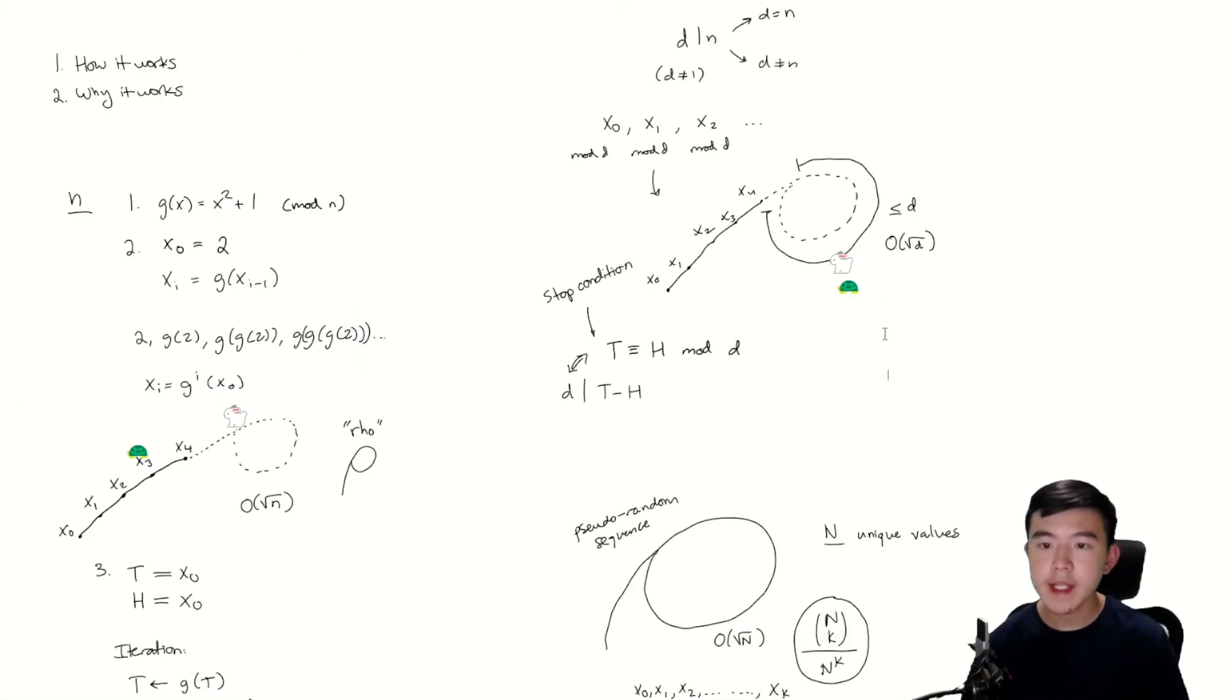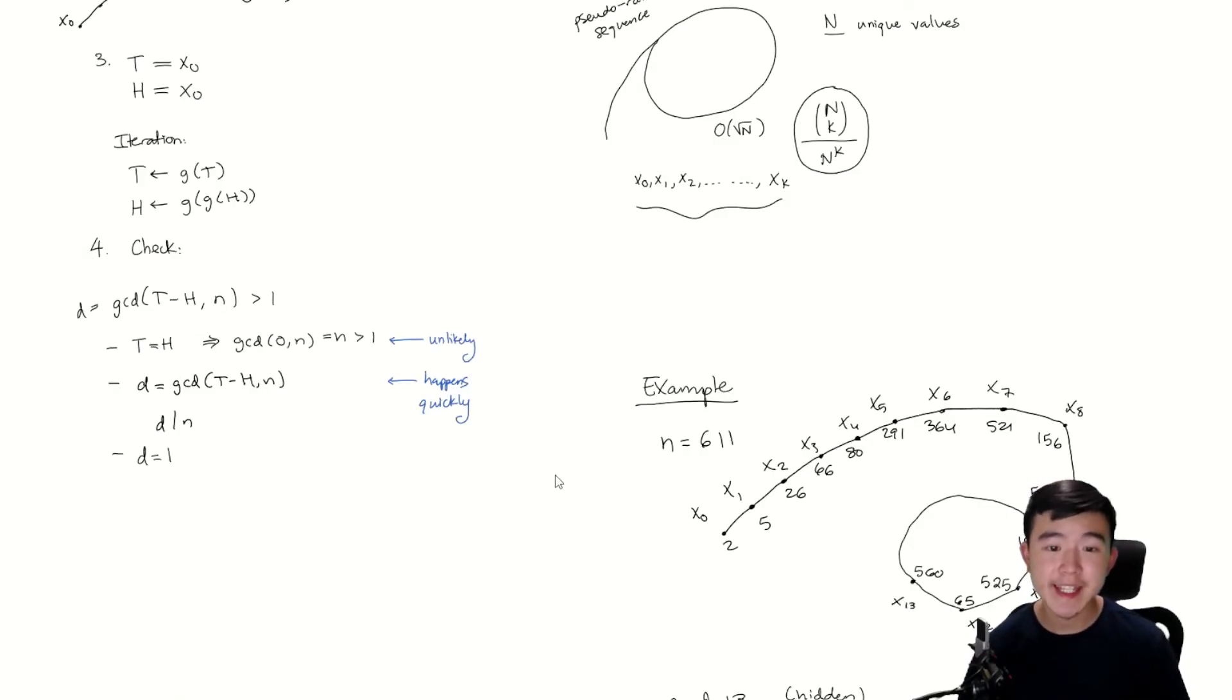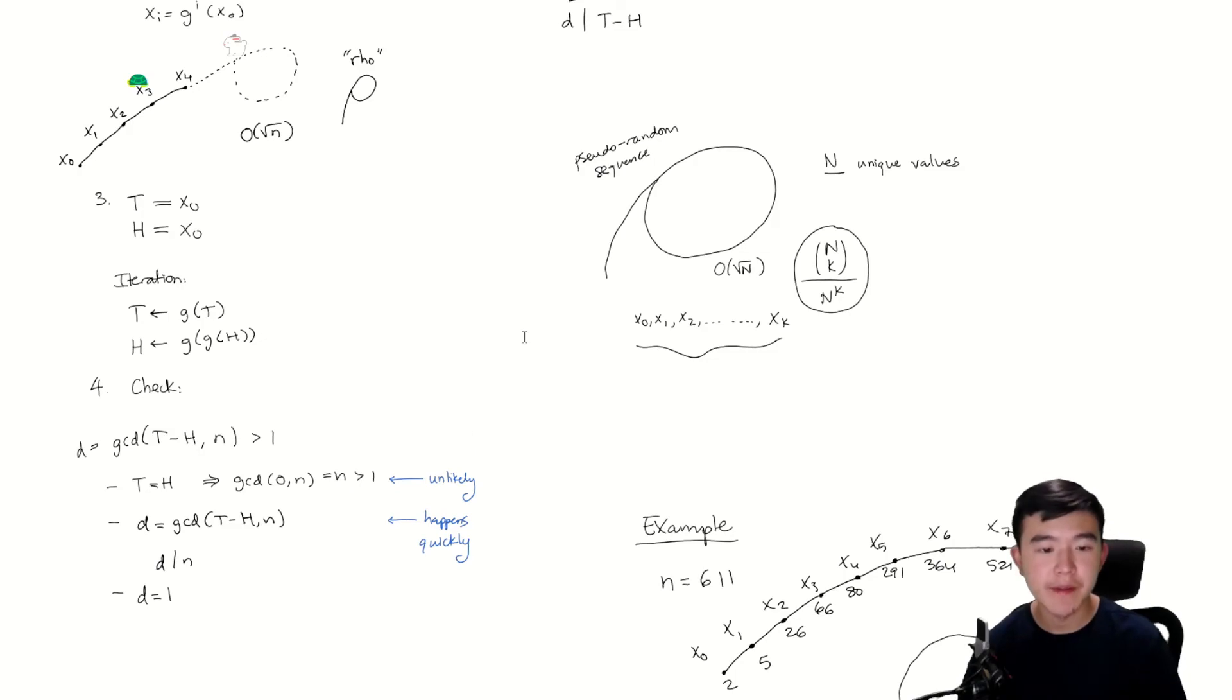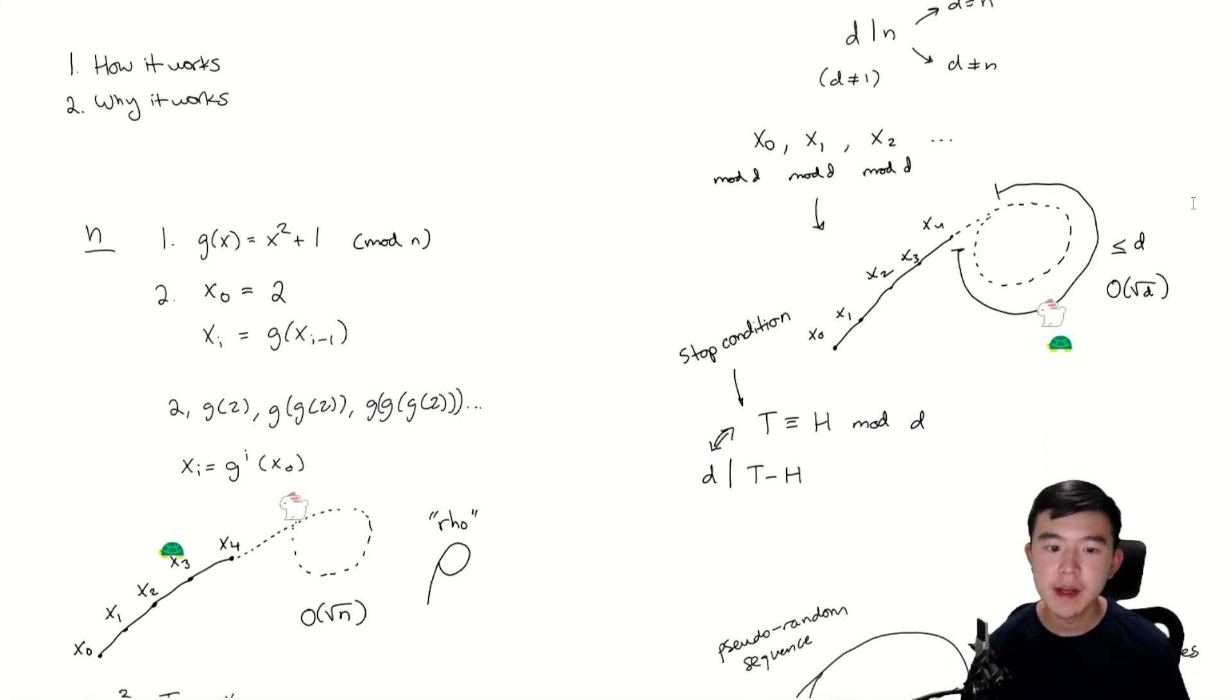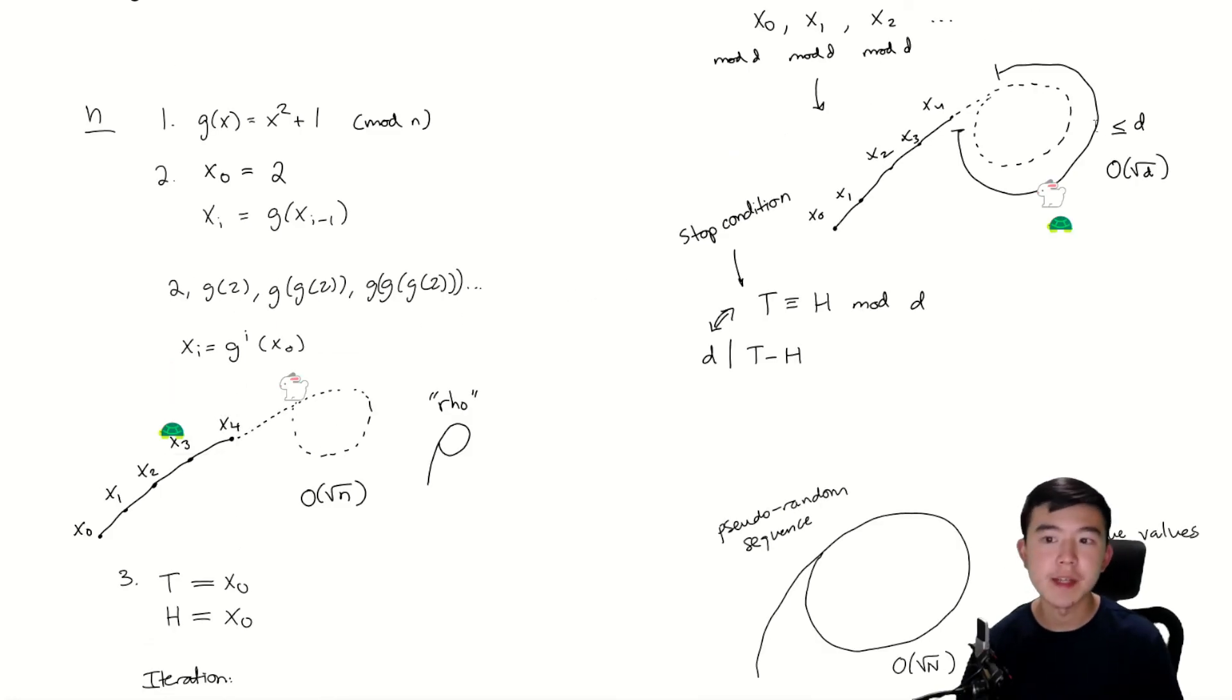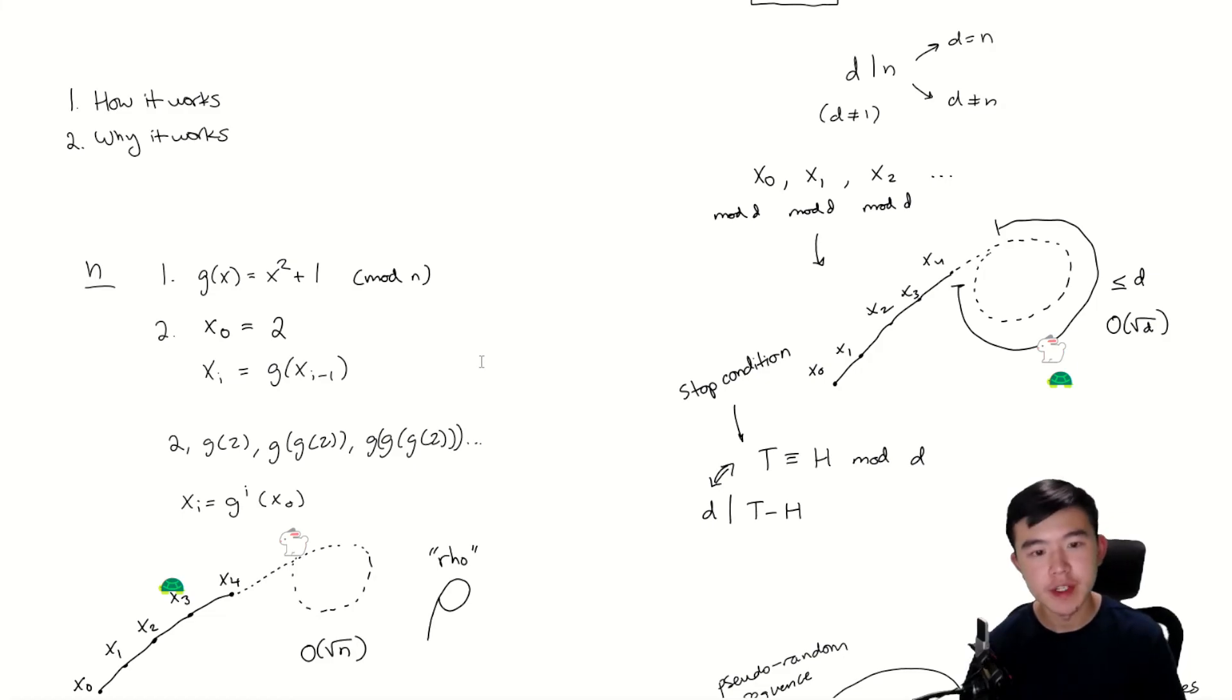So on average, the tortoise and the hare will end up at the same place on this new sequence, which means we hit the second outcome of the stop condition instead of the first one, which means we found a non-trivial factor of n. The algorithm fails when the length of the cycle on the original sequence is equal to the length of the cycle on the mod d sequence, because that means the tortoise and the hare will end up at the same place, at the same time on both sequences. But in that case, as I described, we'll just restart with a different polynomial or different starting value.